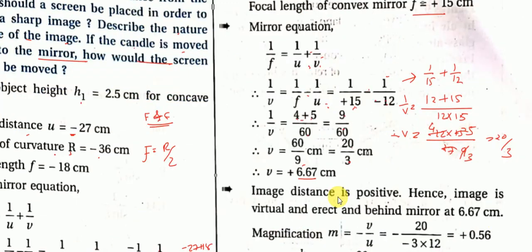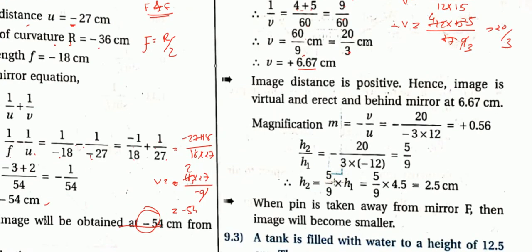Image distance is positive, which means the image is behind the mirror — opposite side from the object. In convex mirrors this always happens. So image distance is positive; hence the image is virtual and erect, and it forms behind the mirror.